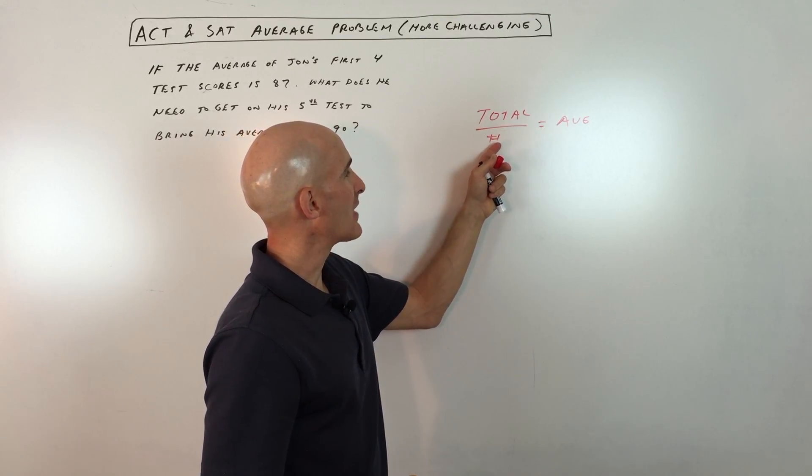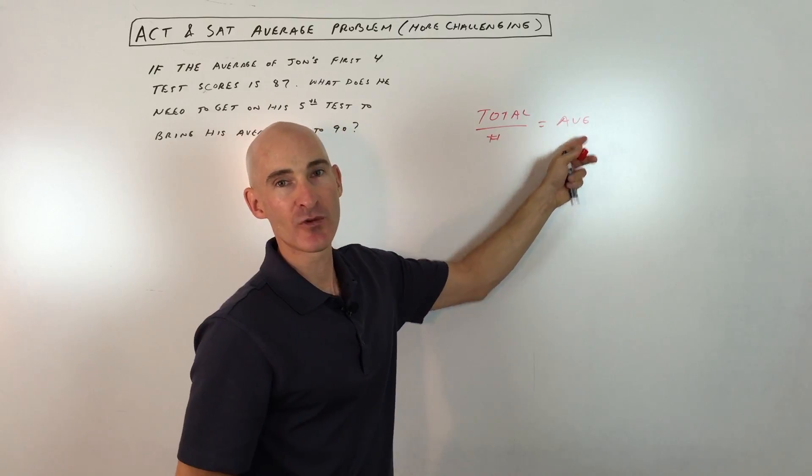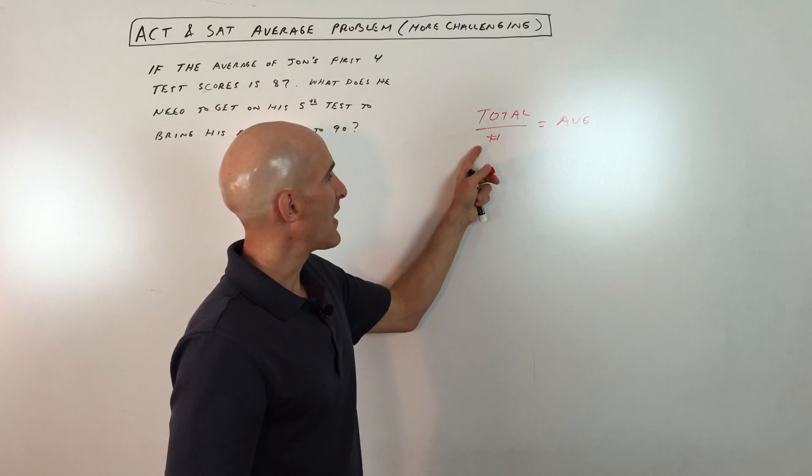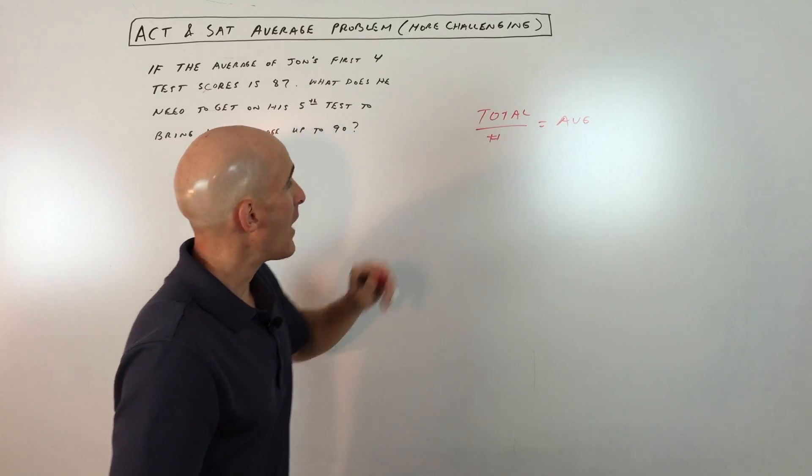Divide by the number of games that you played, and that's your average number of scored shots per game. So it's the total divided by how many—that's the average. Now what we're going to do is get into a more complicated problem that they often put on these ACT and SAT tests.